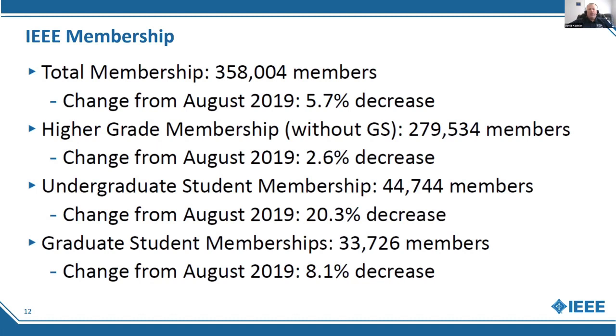I'll go a little slower. For graduate student memberships, we have about 34,000 members, and that's an 8.1% decrease.